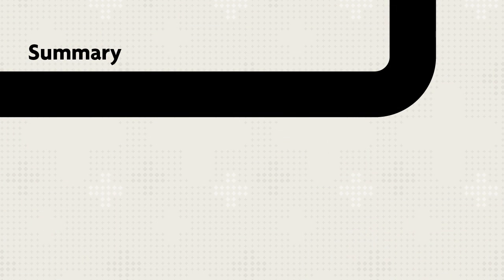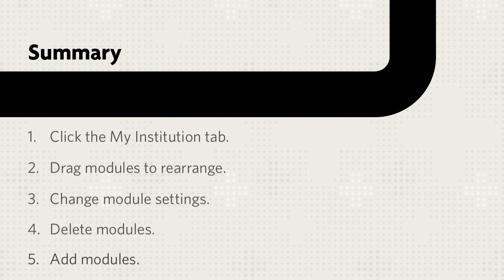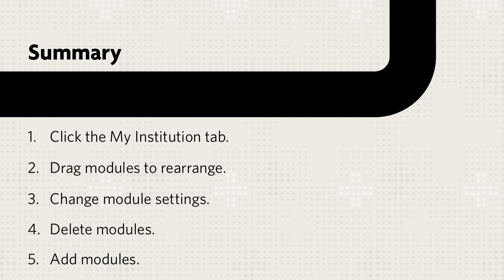Let's review. First, click the My Institution tab. You can drag modules to rearrange them. Point to a module to reveal its settings, function, or delete icon. Add new modules to display more content on the page.